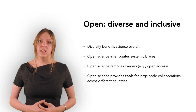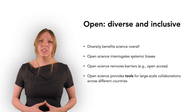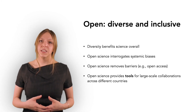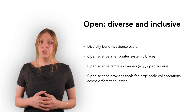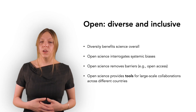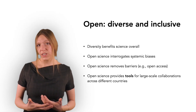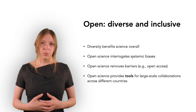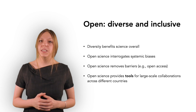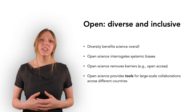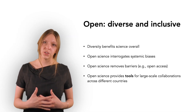One final word in this introduction is on how 'open' also means both diverse and inclusive. Diversity benefits science overall, and open science aims at making science diverse in a number of ways. In particular, open science provides opportunities to interrogate systemic biases — for example, when designing studies or when proposing changes to the metrics used to evaluate scientific outputs. Open science also aims at removing barriers and obstacles. Open access and preprints, for instance, aim at making science accessible to all. Finally, open science helps with diversity by providing tools for large-scale collaborations across different countries.